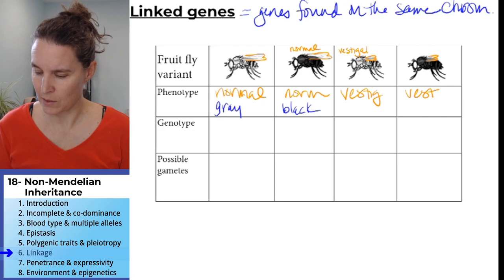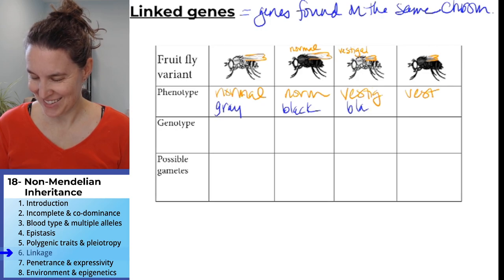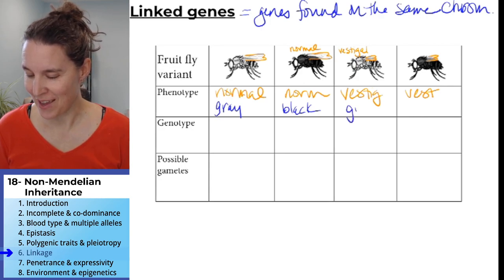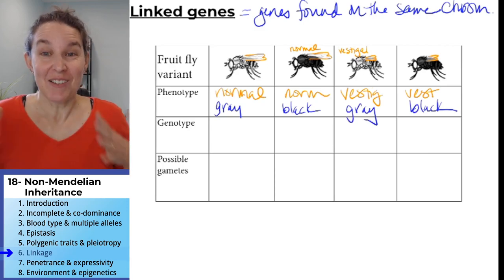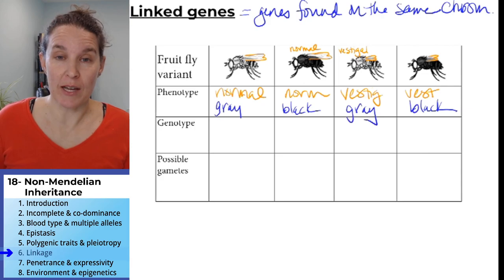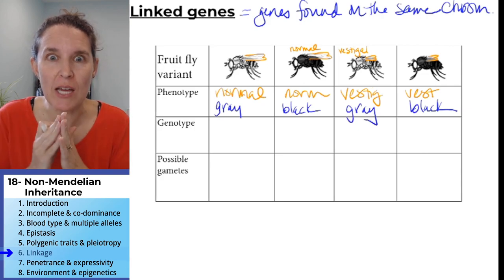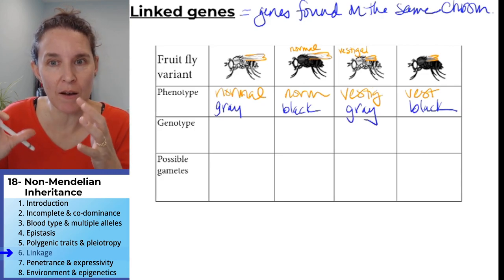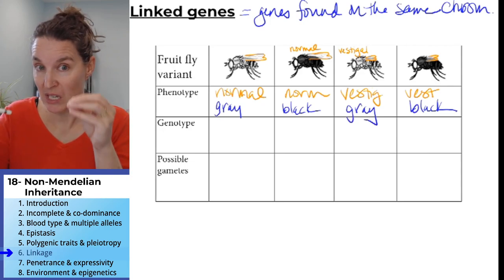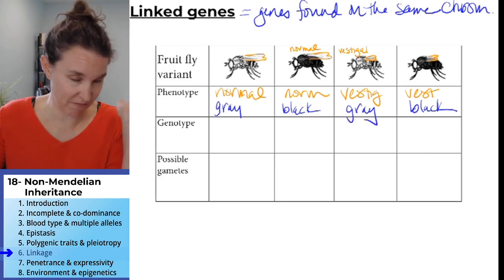This one is black. So we've just identified the phenotypes of the fruit flies. Phenotypes are descriptions of things we can see, things we can touch, proteins that we can find.